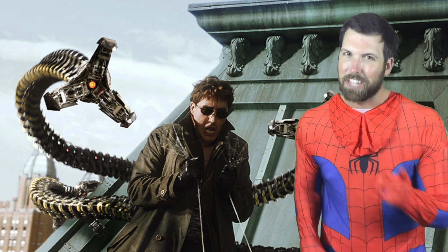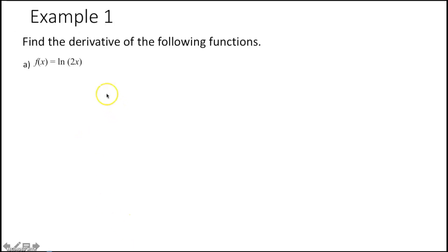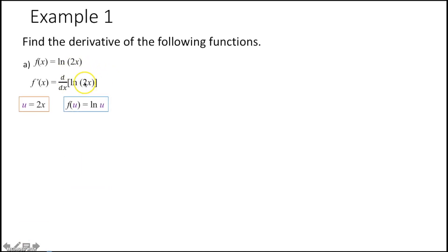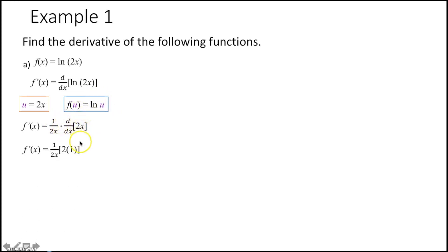Example one: find the derivative of f(x) = ln(2x). The derivative of ln(x) is 1 over x, but here we have an inner function, 2x. Our inner function is u = 2x, and our outer function is ln(u). By the chain rule, the derivative of ln(u) is 1 over u, which gives 1 over 2x. Multiply that by the derivative of 2x, which is 2. You get 2 over 2x, which simplifies to 1 over x.